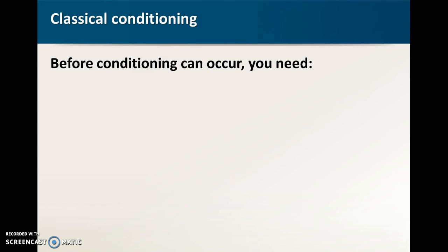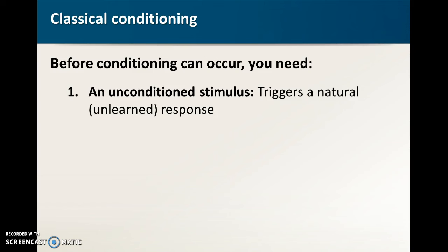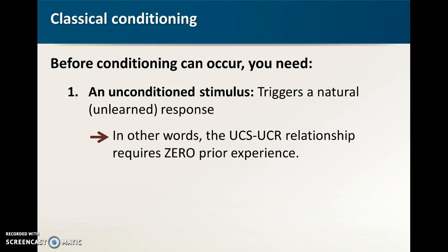So the example I'm going to give you here is kind of a similar one to what you learned about with Pavlov's dogs but one that you may be more likely to have seen in your own lives. So before classical conditioning can occur what we need is an unconditioned stimulus. This is something that triggers an unlearned response. So unconditioned means unlearned and by this we mean that this requires zero prior knowledge. For example UCS UCR means unconditioned stimulus and unconditioned response.